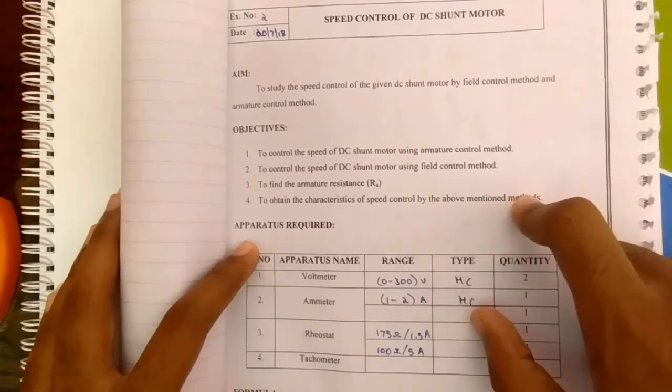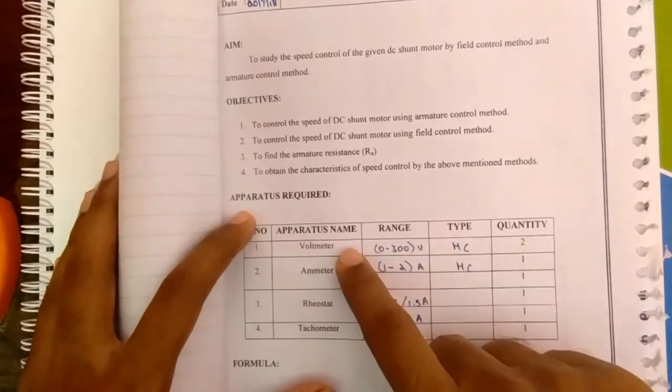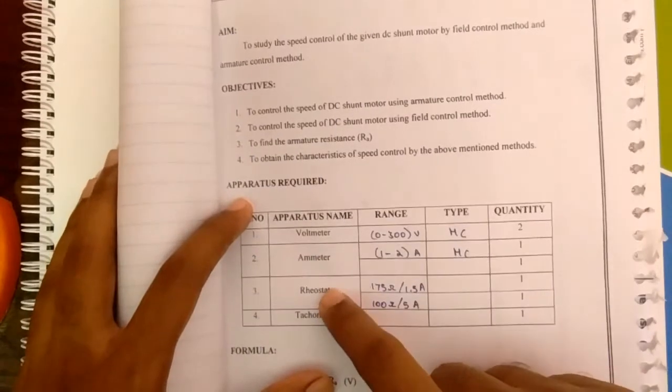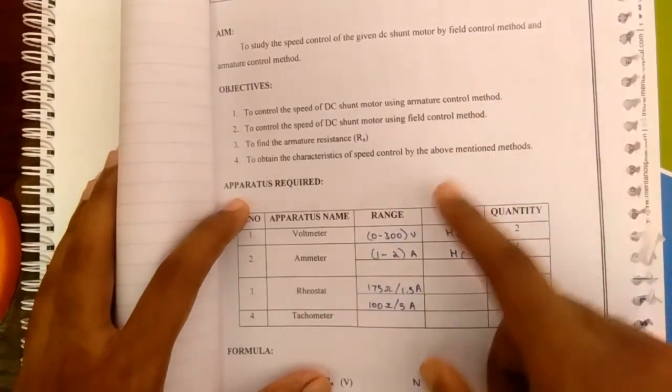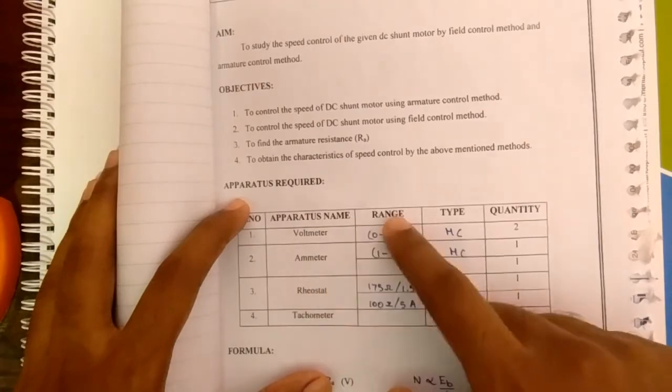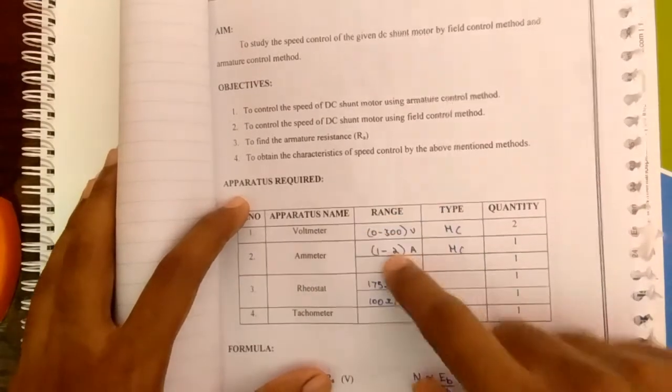So the apparatus required will be voltmeter, ammeter, rheostat and tachometer. The voltmeter, ammeter and rheostat we should take in the corresponding ranges.